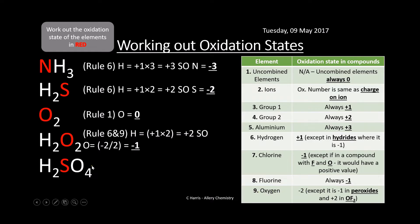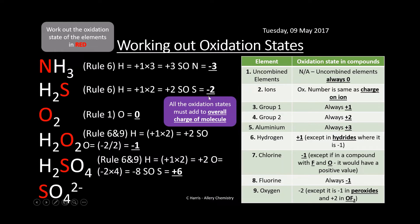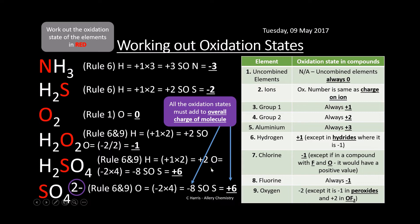In H₂SO₄, oxygen is −2 and there are four of them giving −8 total. Hydrogen is +1 and there are two, giving +2. So sulfur must be +6 to make the molecule neutral and balance to zero. For the sulfate ion SO₄²⁻, oxygen is −2 with four giving −8 total, but the overall charge is −2, so sulfur must be +6 to make the sum equal −2. All oxidation states must add up to the overall charge of the molecule or ion.